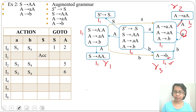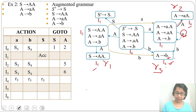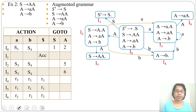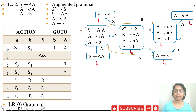I4 is reduction 3, so write R3 in all action columns: a, b, and dollar. I5 is reduction 1, so write R1 in a, b, and dollar columns. I6 is reduction 2, so write R2 in a, b, and dollar columns. The LR automation and LR parsing table are complete. There are no multiple entries, so this is an LR grammar. In the next lecture I will discuss more examples of LR parsing. Please like and subscribe.